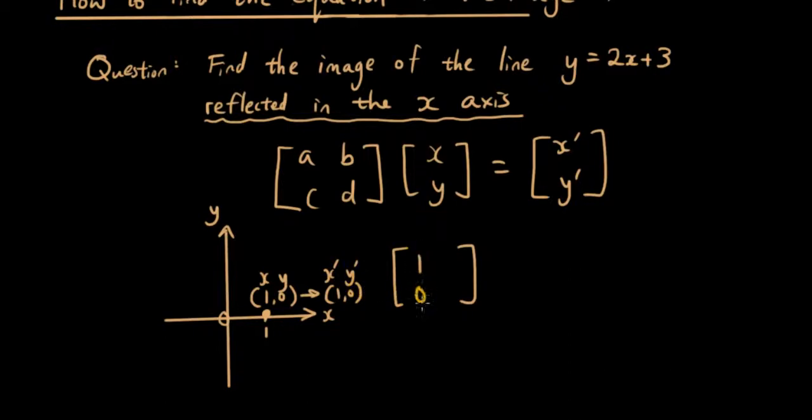Now the second point, which is located here at 0, 1. Now the image of that is located at 0, negative 1. And these are the two numbers we fill in in b and d. So that's 0, negative 1. So this is the transformation matrix for x-axis reflection.